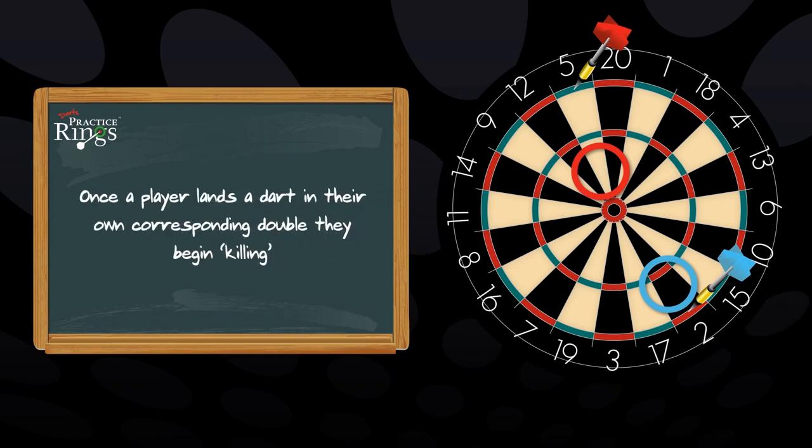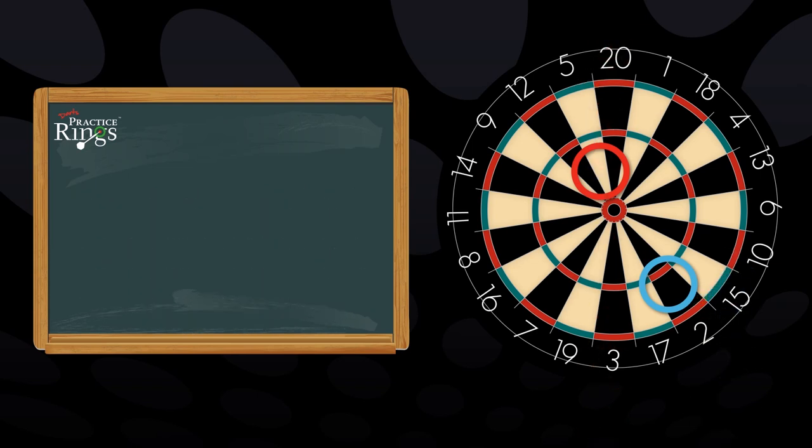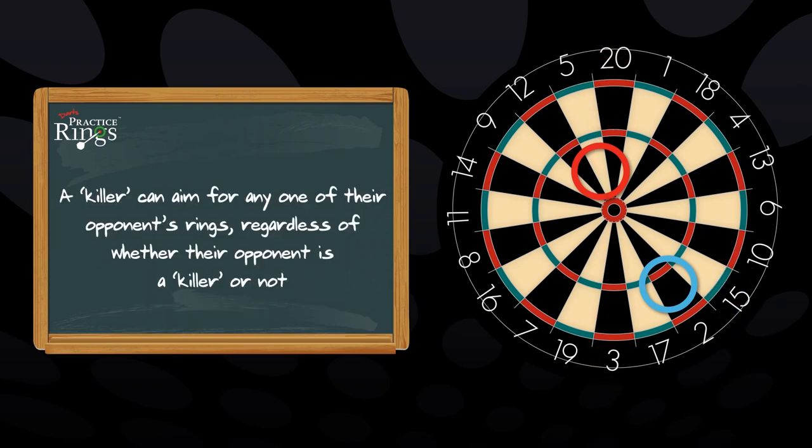Once a player lands a dart in their corresponding double, they begin killing. A killer can aim for any one of his opponent's rings, regardless of whether they are themselves a killer or not.